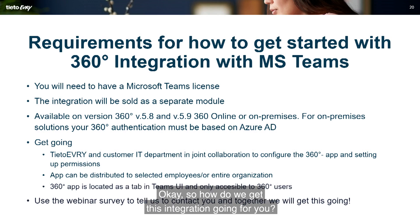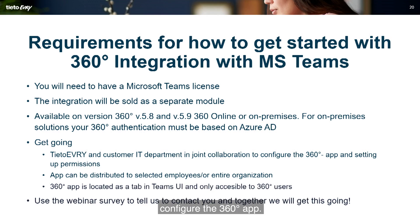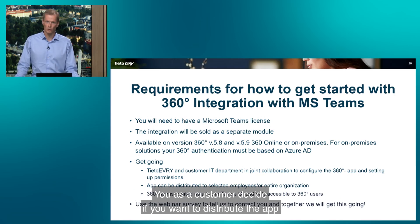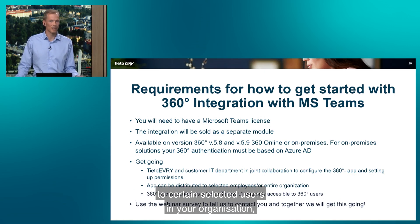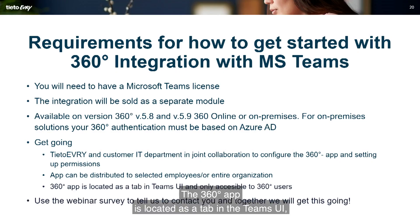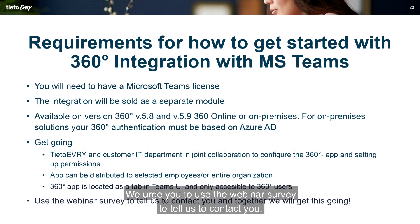To get the integration going, Tieto Evry and the customer's IT department will jointly configure the 360 app and set up permissions together. As a customer, you decide whether to distribute the app to a selected group of users or to all users in your organization. The 360 app appears as a tab in the Teams UI and is only accessible to 360 users. We urge you to use the webinar survey to tell us to contact you, and together we will get this integration going.